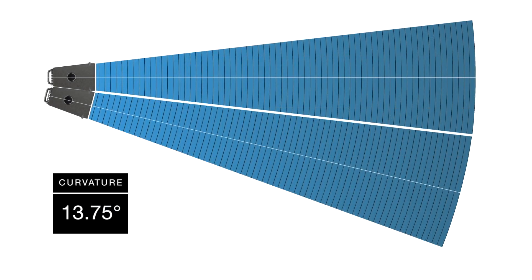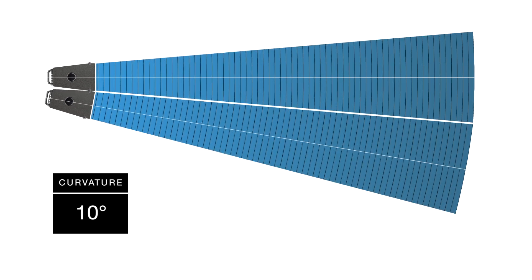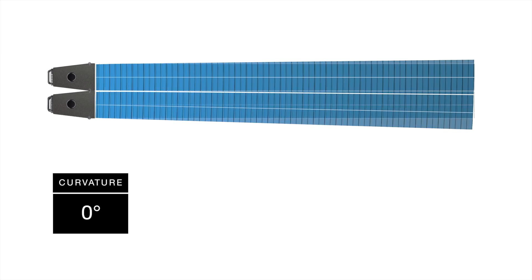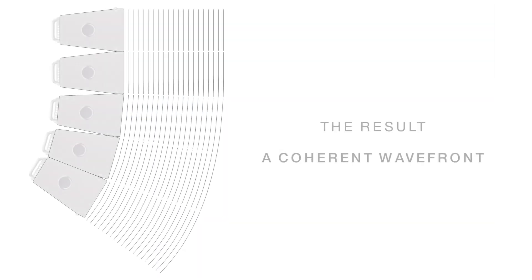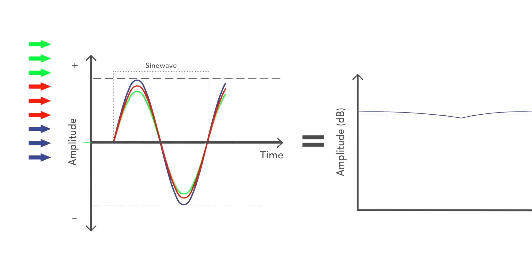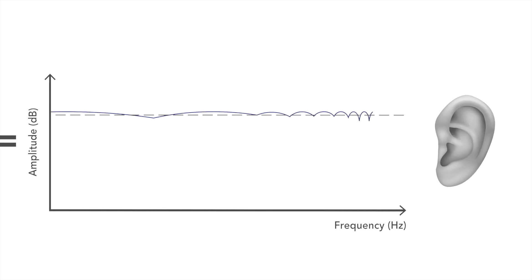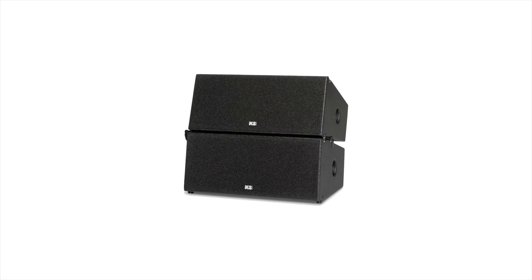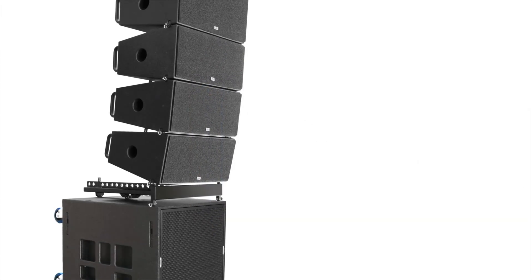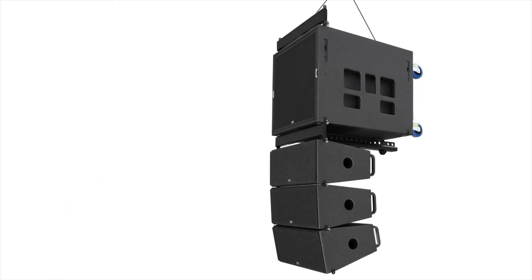With VELTECH, you can now adjust the angle of each element exactly to the mechanical curvature between neighboring elements. As a result, there is no overlap between the wavefronts of the different elements, resulting in a homogenous wavefront and no level differences in the frequency response. Optimal clarity. The result of a homogenous wavefront is a line array that behaves like a real point source.